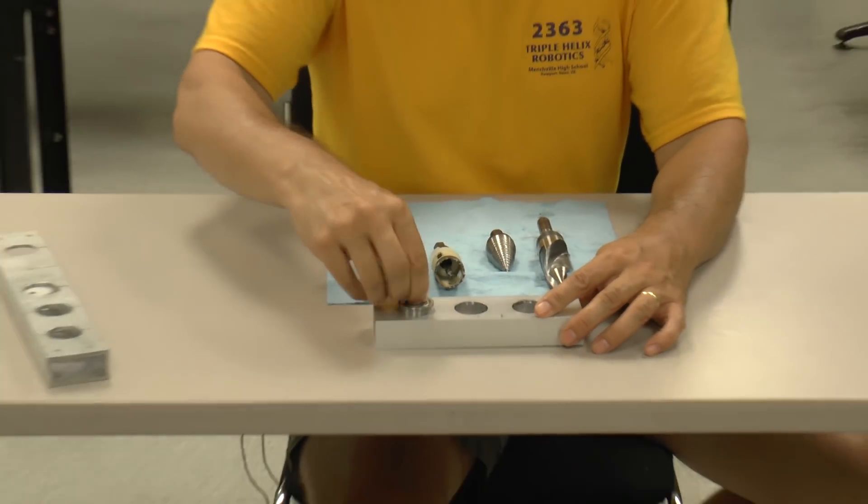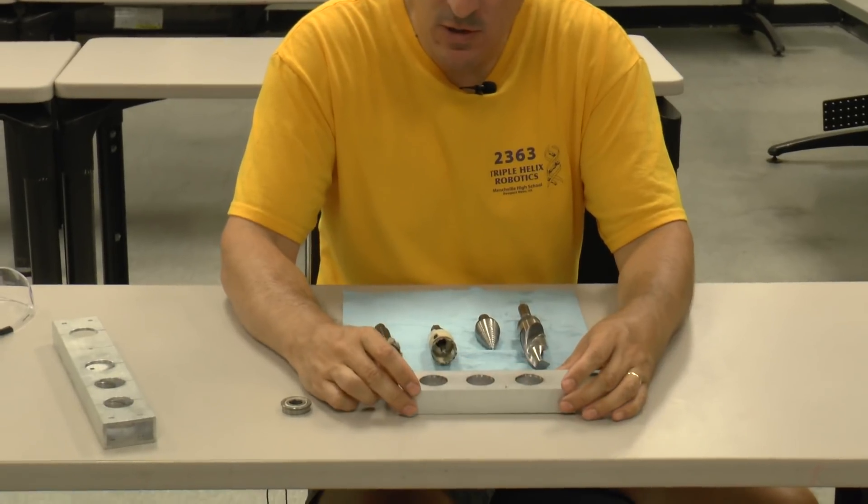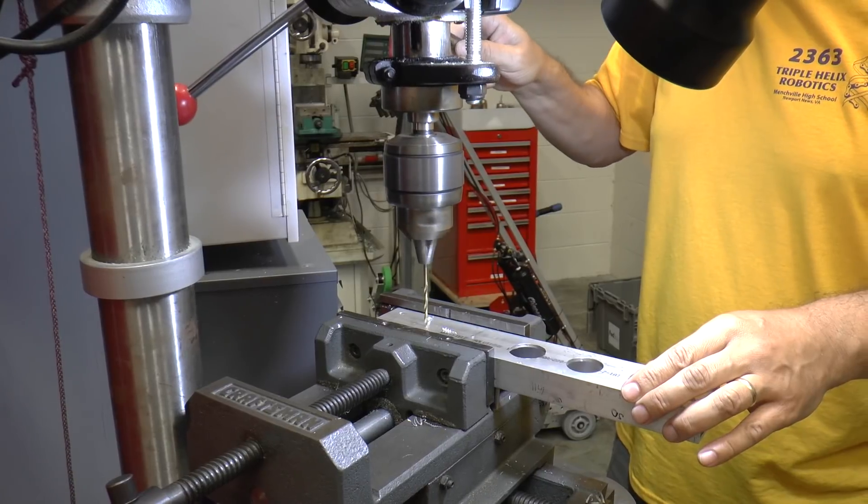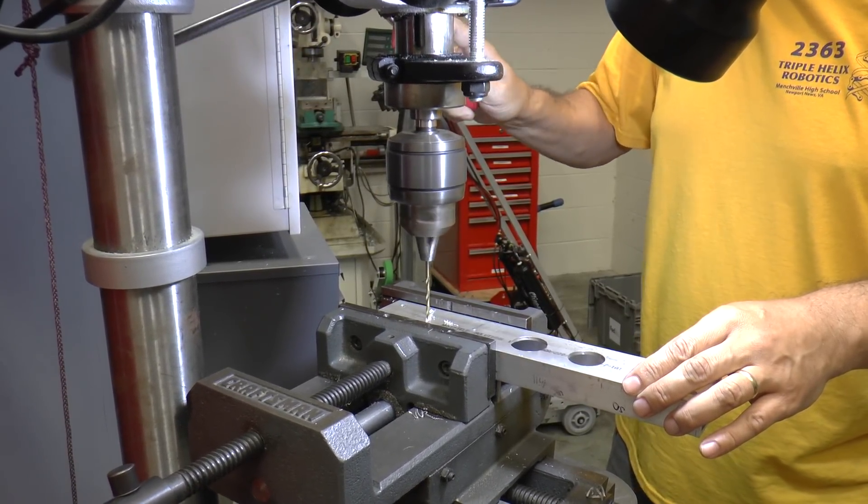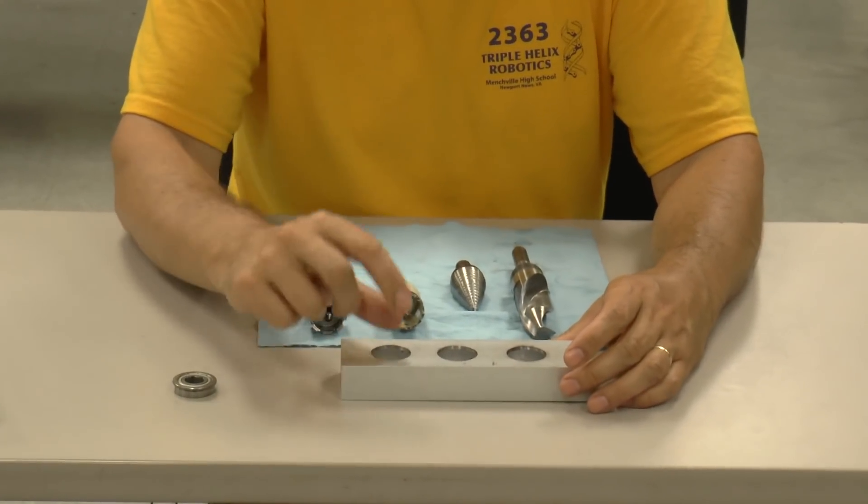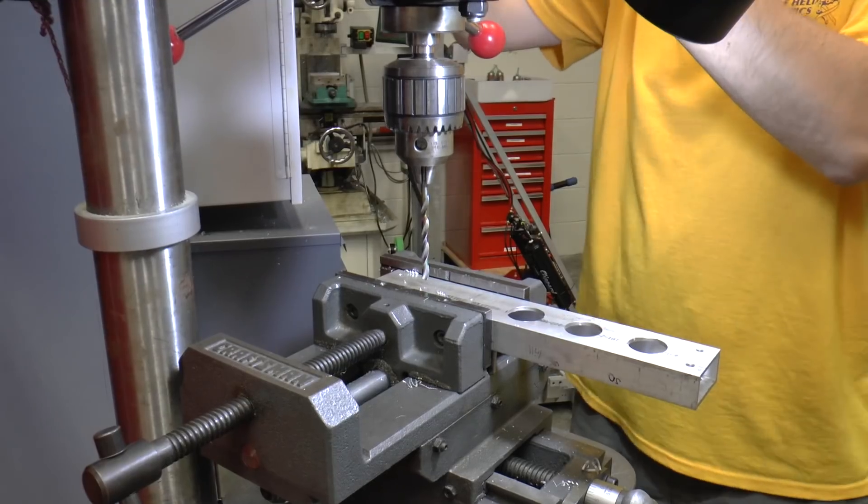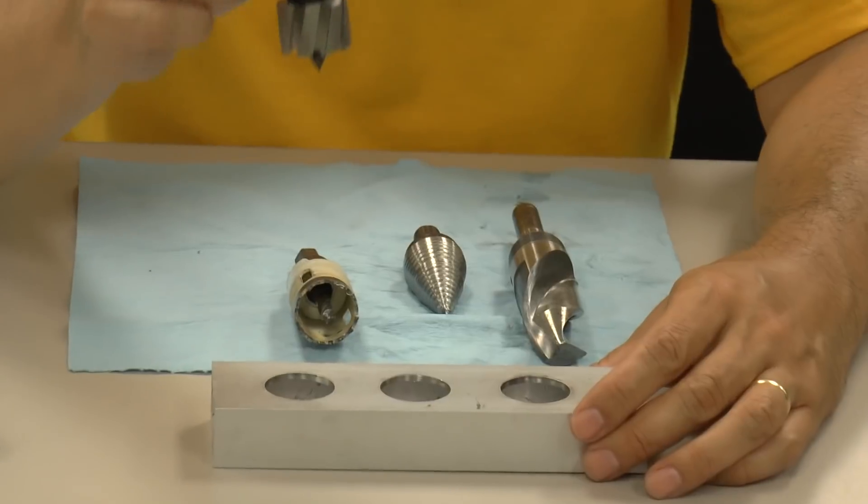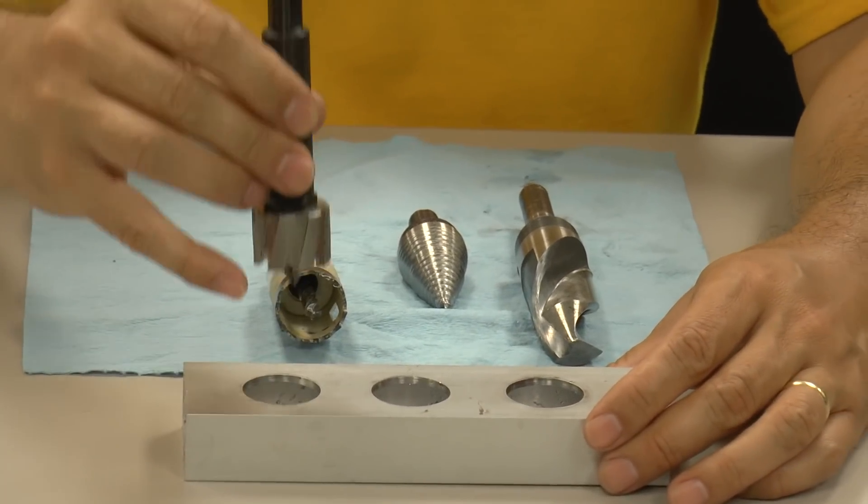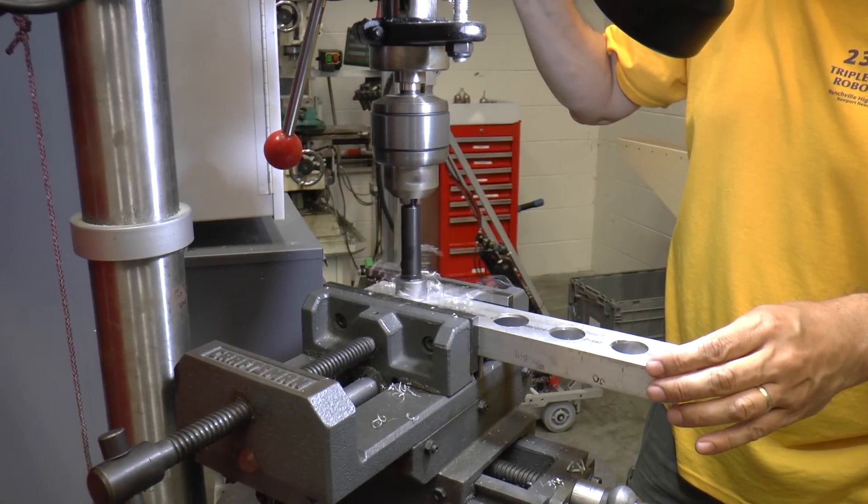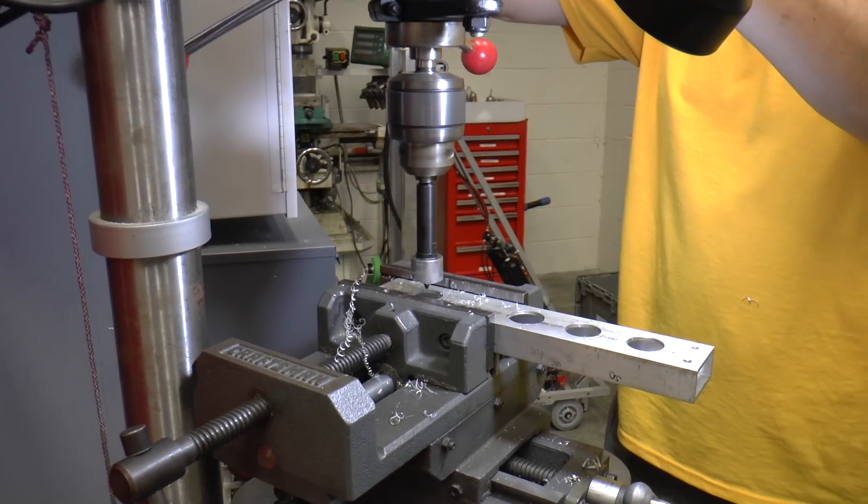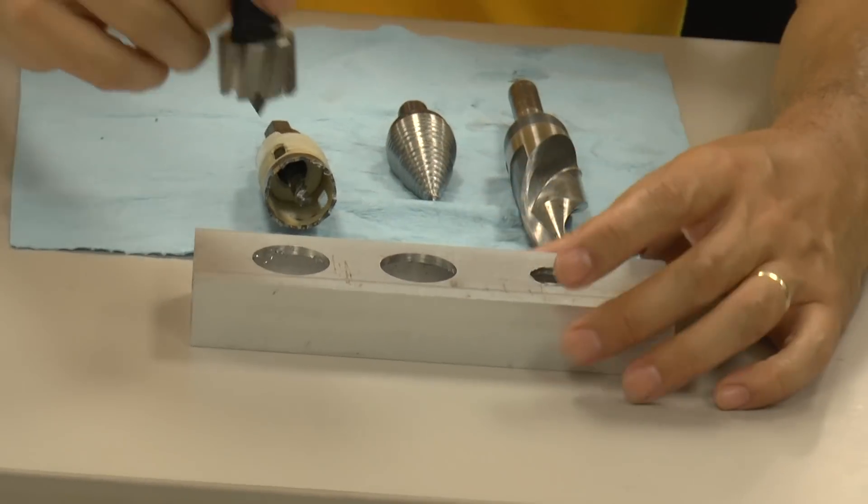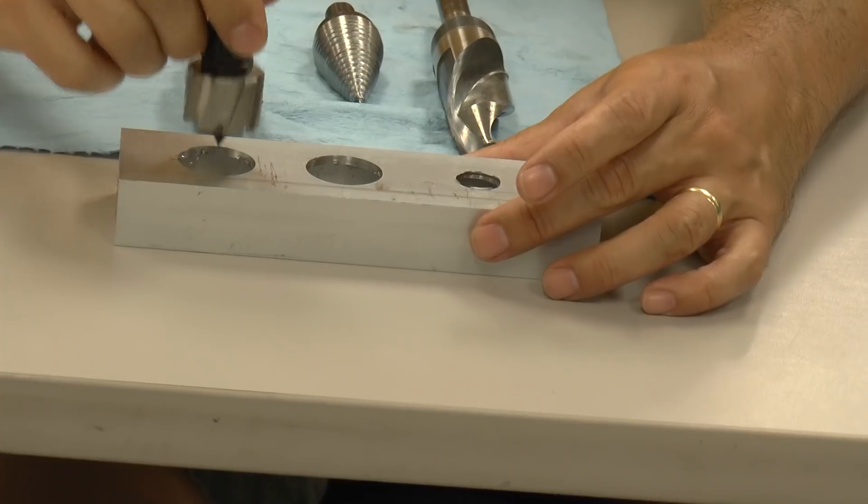And the way that we did these is we set this up in the vise on the drill press. We drilled a one-eighth inch hole straight through both sides of the tube. Then took that one-eighth inch drill bit out, replaced it with a quarter inch drill bit and drilled that through both sides of the tube. And then we chucked up this cutter and put the hole through the first face. Then we took this part and flipped it over and used the pilot that's on the inside, located in that quarter inch hole, to put the hole on the second face.